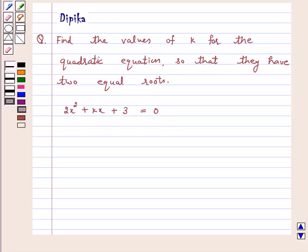Let's start the solution. Our given equation is 2x² + kx + 3 = 0.